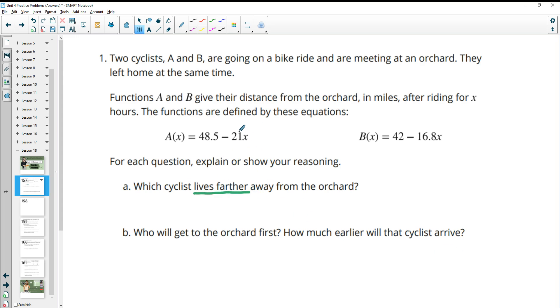So if we think about what this means, they're getting closer to the orchard after a certain amount of time. If they've traveled zero hours, this is how far they are from the orchard. The first person is 48.5 miles from the orchard and the second person is 42 miles from the orchard. So that would mean that A of X is further, because they're 48.5 miles away initially.